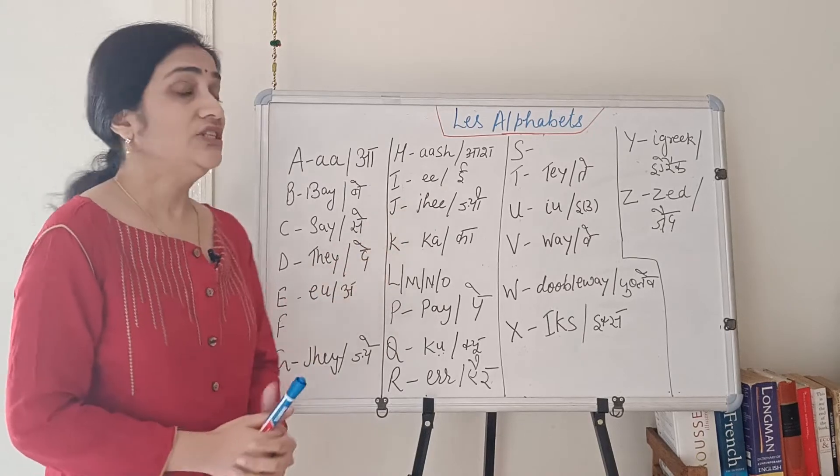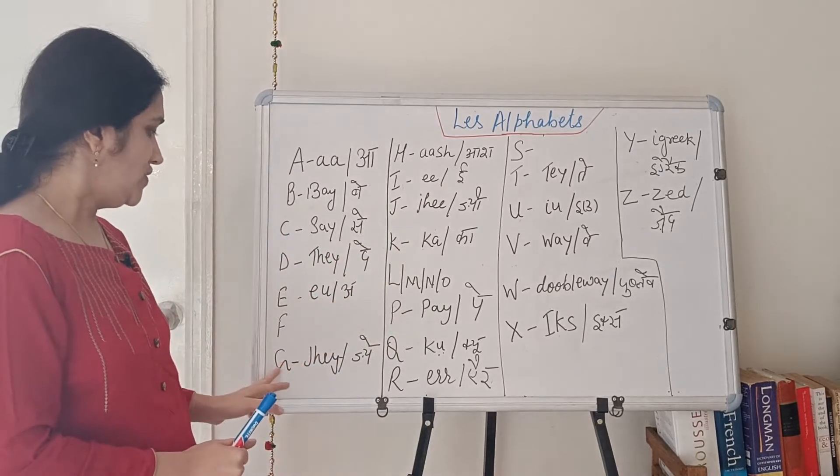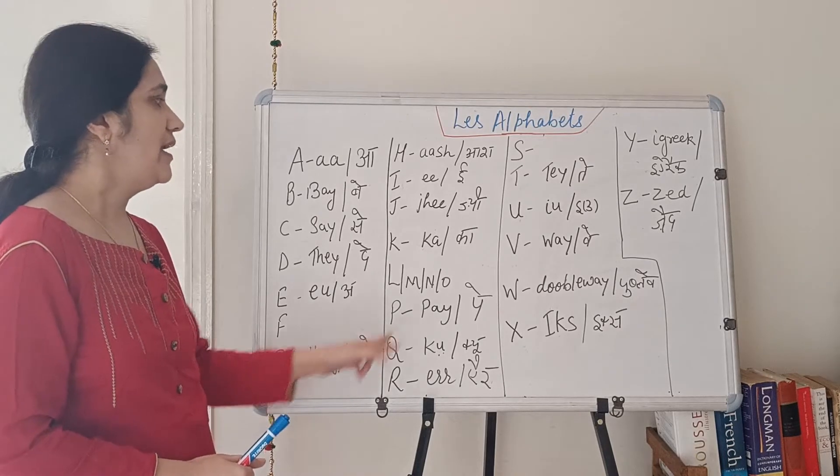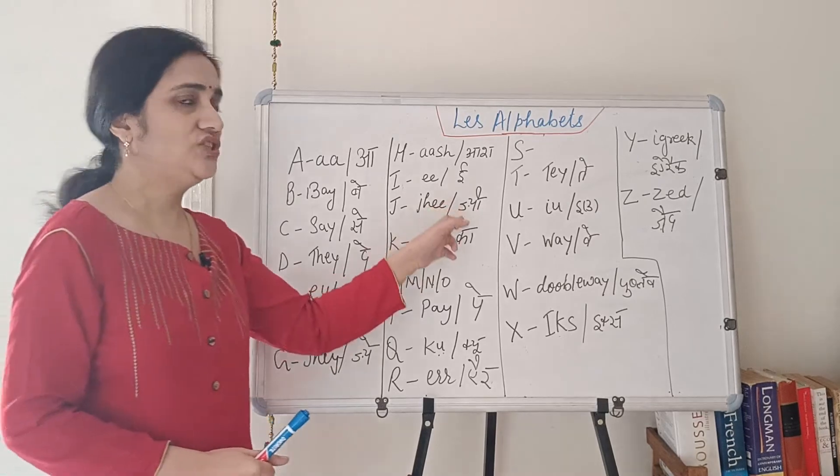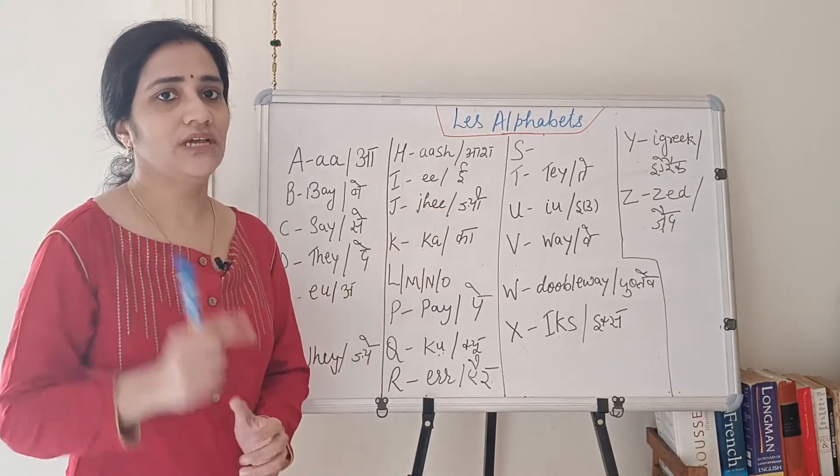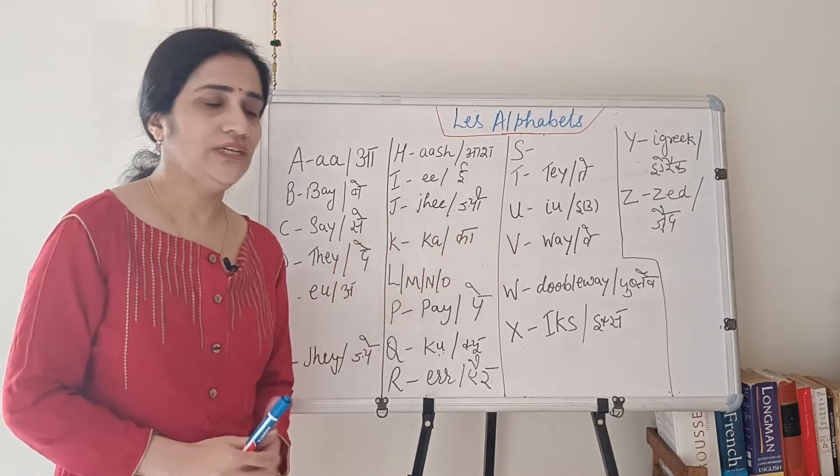Now the J sound G. So here, this G, the sound is J, and for this J letter, it is G. J and G. Again that J sound like the measure. J. So J sound G.